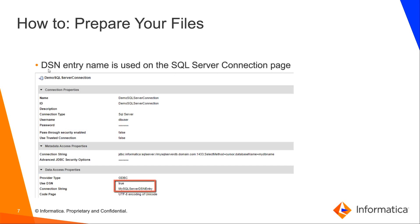Now that the DSN entry is created, here is a screenshot of the IDQ admin console connection properties page. I have a Microsoft SQL Server type connection. Under data access properties, I have set 'use DSN' to true, and then I have my DSN entry name entered. Each time I am reading or writing data to this connection, it will read odbc.ini and refer to this DSN entry to do that.